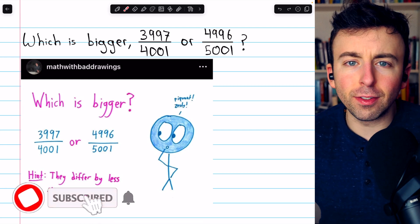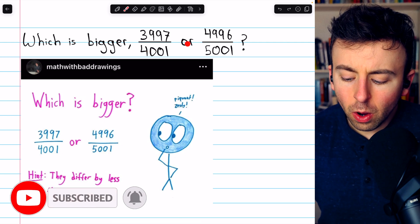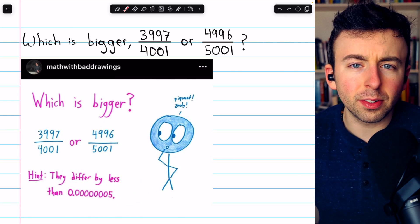Which of these nasty fractions is bigger, 3,997 over 4,001 or 4,996 over 5,001?